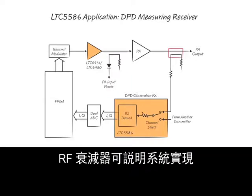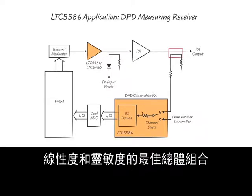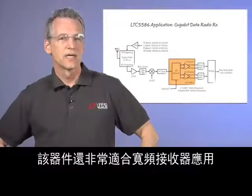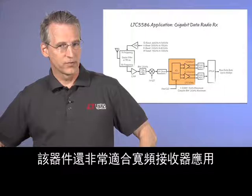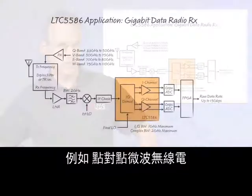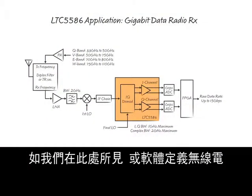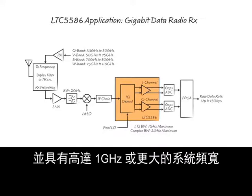The RF attenuator helps the system achieve the best overall combination of linearity and sensitivity. The device is also well-suited for wideband receiver applications, such as point-to-point microwave radios, or software-defined radios with system bandwidth up to 1 GHz or more.